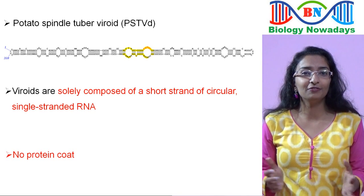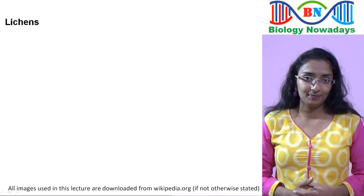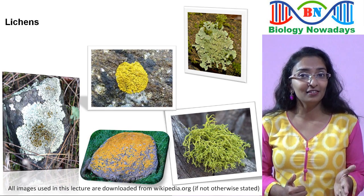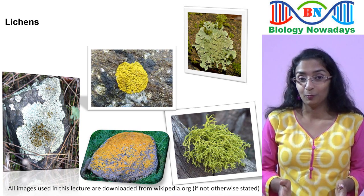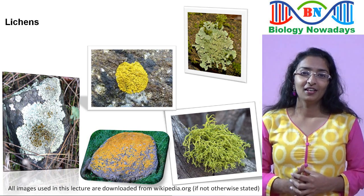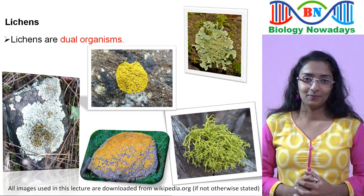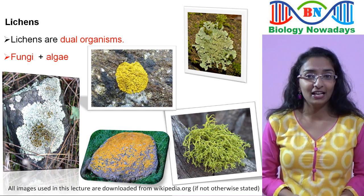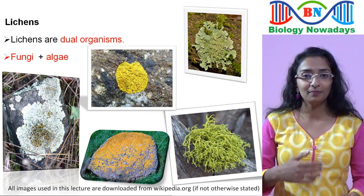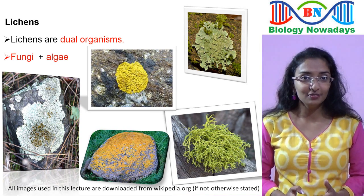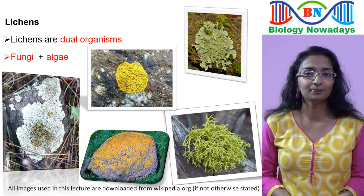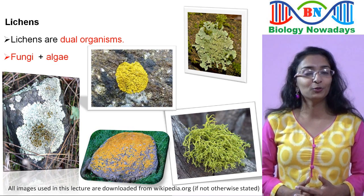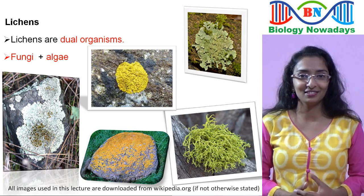The next group of organisms that didn't find a place in Whittaker's classification was lichens. Unlike viruses and viroids, lichens are truly living organisms. The problem with lichens was that they are dual organisms — composed of two entirely different organisms: fungi and algae. Here, fungi and algae form a symbiotic relationship benefiting each other. The fungal partner provides shelter for the algae, and in turn the algae provides food for the fungal partner. These two partners fuse in such a way that they can never be separated. To know more, check out part 4 of the biological classification lecture.